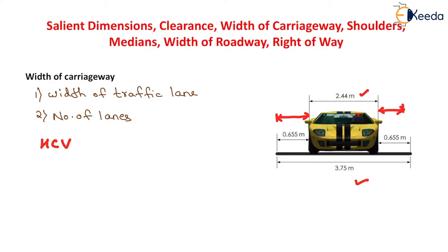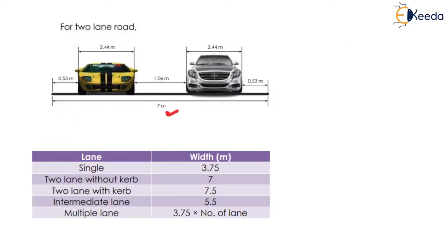The lateral placement of heavy commercial vehicles on single and two-lane pavement is shown in the diagram. The width of carriageway for various classes of roads standardized by the Indian Road Congress (IRC) is given in this table: single lane road - 3.75 meter; two lane without curb - 7 meter; two lane with curb - 7.5 meter; intermediate lane - 5.5 meter; and multiple lane pavement - 3.5 meter multiplied by number of lanes.